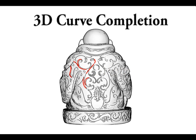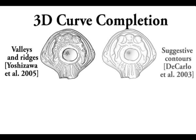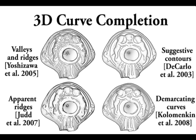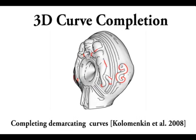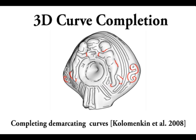The first application is completing curves produced by algorithms for curve detection of surfaces, such as valleys and ridges, suggested contours, apparent ridges, and demarcating curves. These algorithms might fail to detect curves on weak surface patches. Here we use 3D Euler spirals to complete demarcating curves.